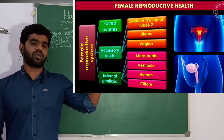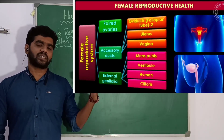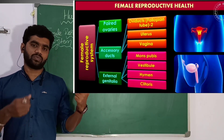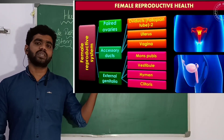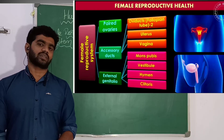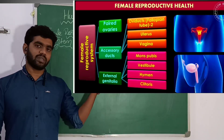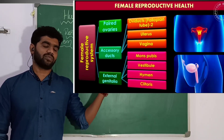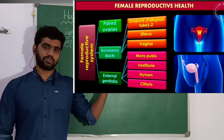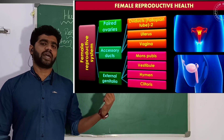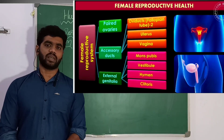There will be a pair of ovaries which are called the primary sex organs. Along with ovaries we have accessory ducts — a pair of fallopian tubes, also called oviducts, plus the uterus and the vagina. And the last component is the external genitalia, which includes mons pubis, vestibule, hymen, and clitoris.